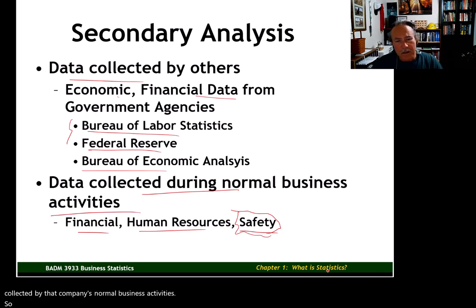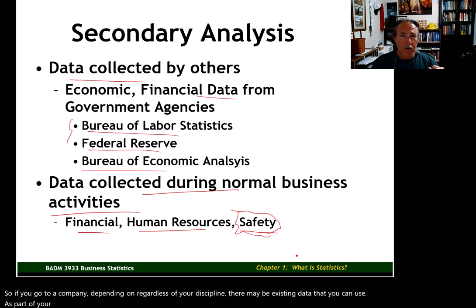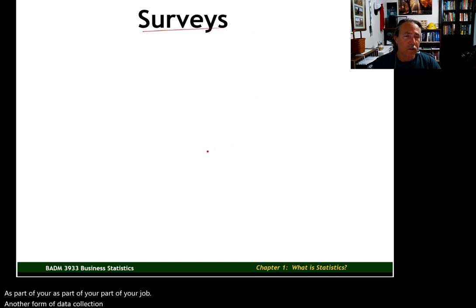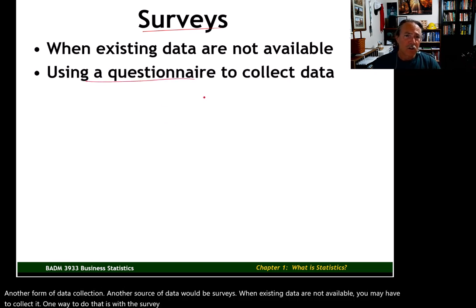If you go to a company, regardless of your discipline, there may be existing data you can use as part of your job. Another source of data would be surveys. When existing data are not available, you may have to collect it. One way to do that is with a survey — you're asking questions of your subjects.